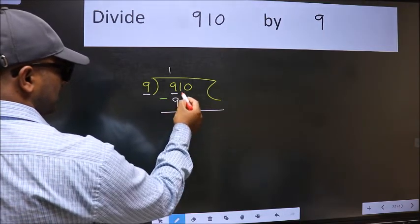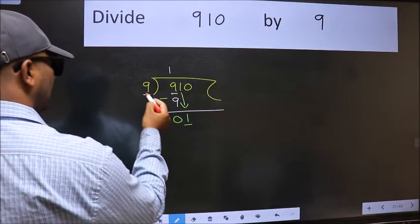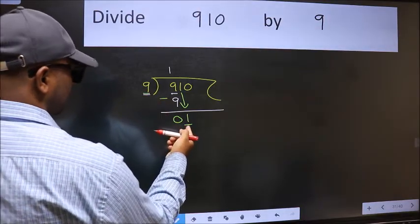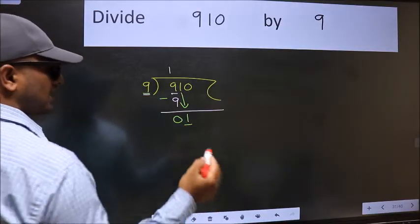After this, bring down the beside number. 1 down. Now here we have 1 and here 9. 1 is smaller than 9. So we should bring down the second number.